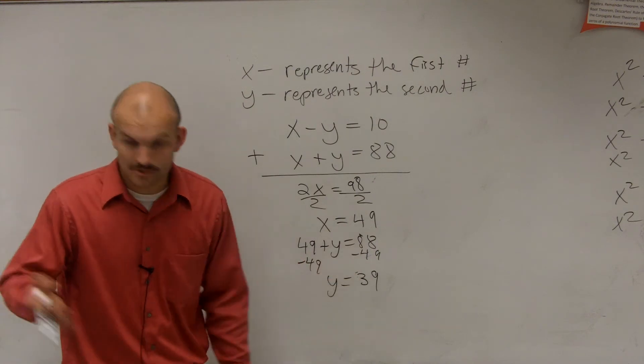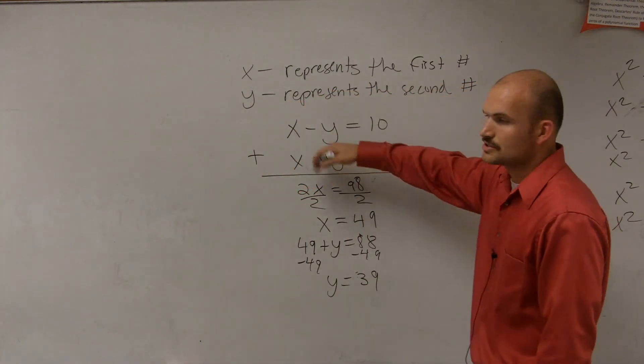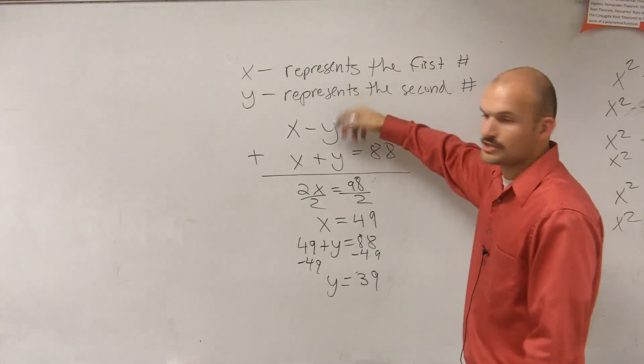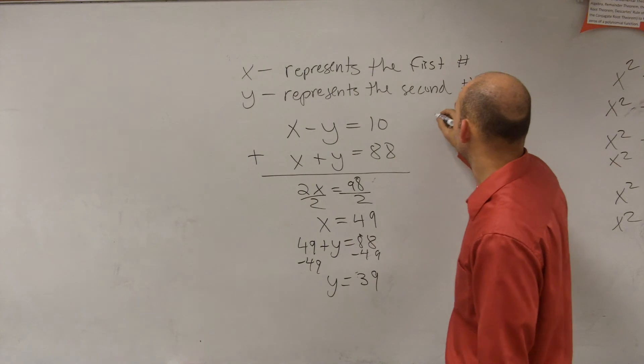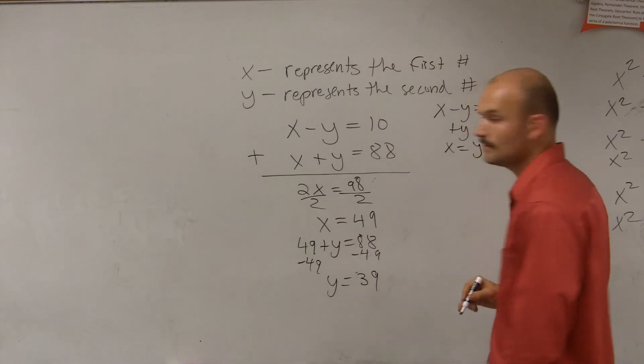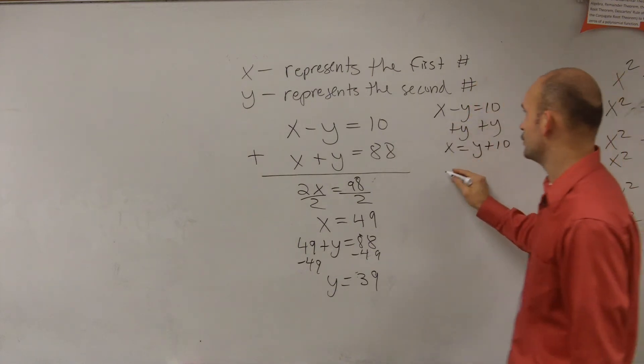So let's take a look at substitution real quick. So substitution, solve for a variable. What variable did you solve for? I solved for x. Which equation, top or bottom? So you did x minus y equals 10. You added y to both sides. So you get x equals y plus 10. Then you plug that into the other equation.